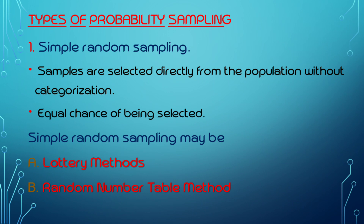By the same way, you have an equal chance to be selected. This is equal chance for being selected — everyone has an equal chance. For simple random sampling, we classify two methods: the lottery method and the random number table method.